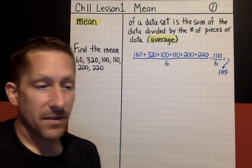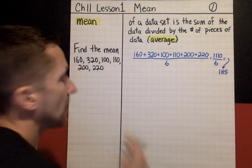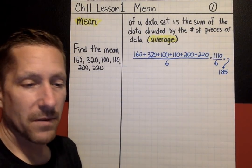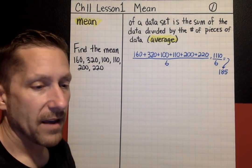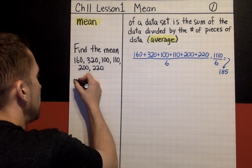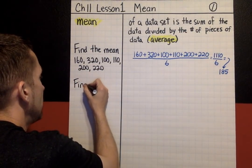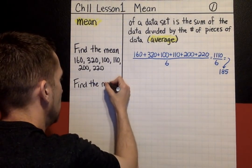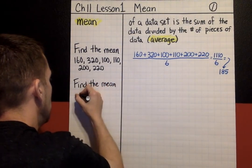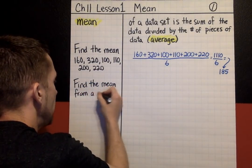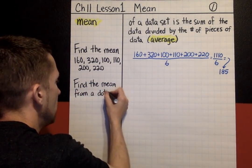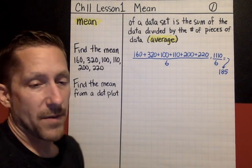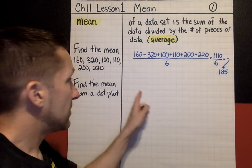Something else that you'll see is sometimes you'll get a set of numbers and they'll just be numbers. Other times, your data will be presented in a different way. Here is another way that you'll see data presented: find the mean, or average, from a dot plot. You might be wondering, what the heck is a dot plot? That's what I'm going to show you next.